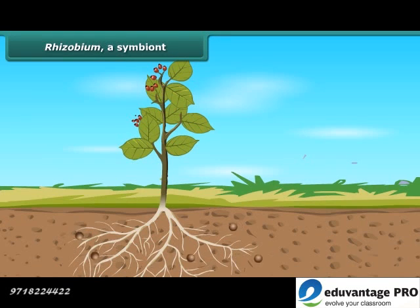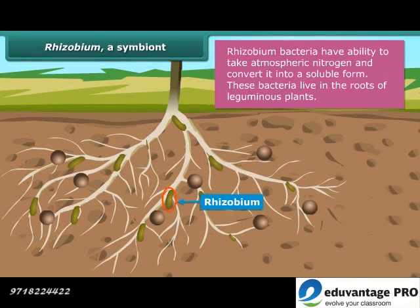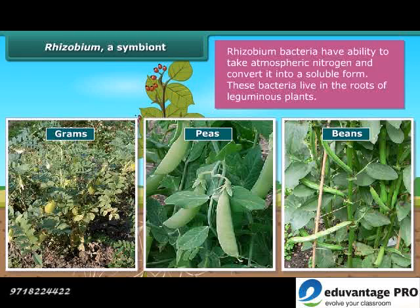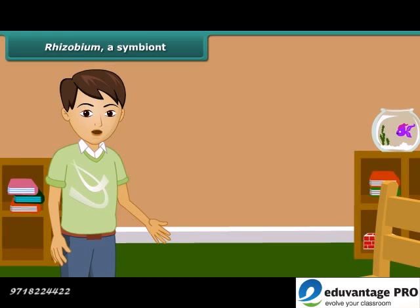Like us, plants also require a lot of nitrogen to make proteins. They absorb nitrogen continuously from the soil, due to which the amount of nitrogen in the soil becomes deficient. There is 78% nitrogen present in our atmosphere, but plants cannot use it directly as they can use carbon dioxide. They require nitrogen in soluble form. The bacterium called Rhizobium can take atmospheric nitrogen and convert it into a soluble form. These bacteria live in the roots of gram, beans, moong, and other legumes, and provide them with nitrogen. In return, the plants provide food and shelter to the bacteria. Thus, Rhizobium shows a symbiotic relationship.